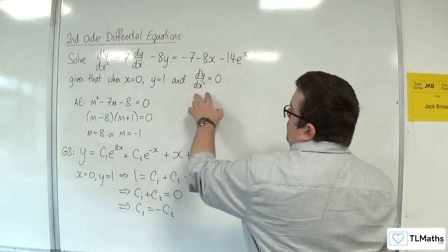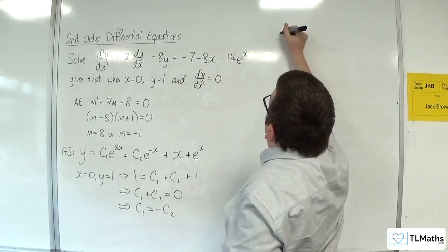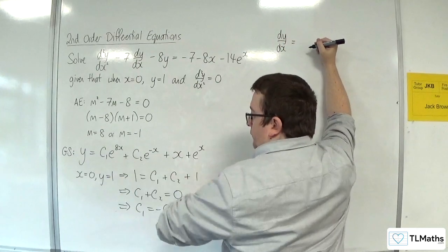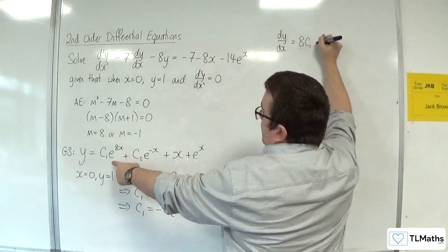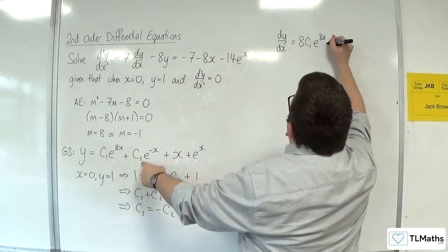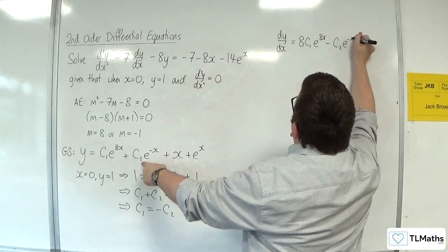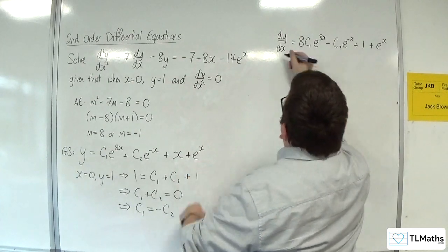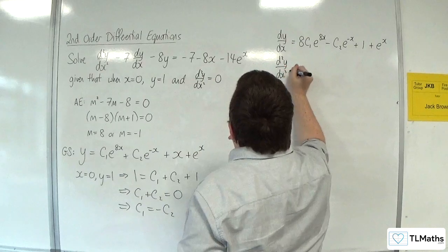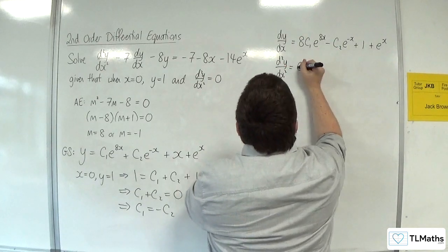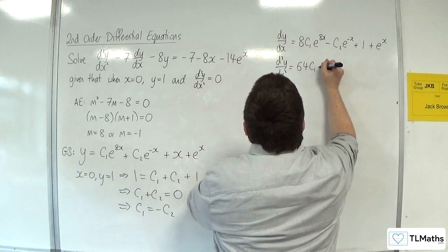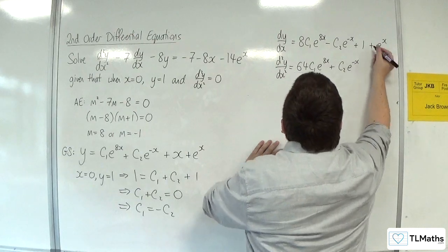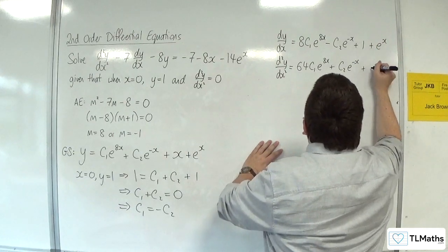Now I need to use the second bit of information here. So I need dy/dx of this. So we'll have 8c₁e^(8x) - c₂e^(-x) + 1 + e^x. Then d²y/dx² would be equal to 64c₁e^(8x) + c₂e^(-x). That differentiates to 0, and I'll have plus e^x.